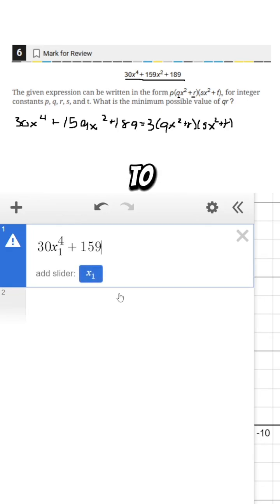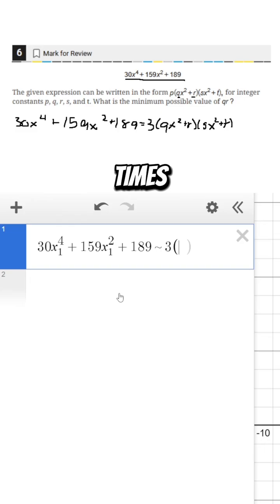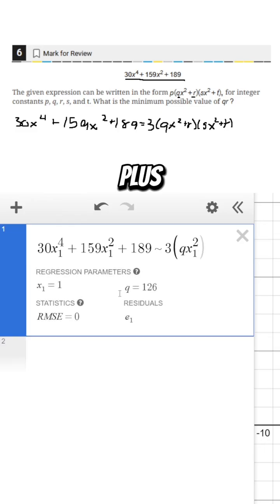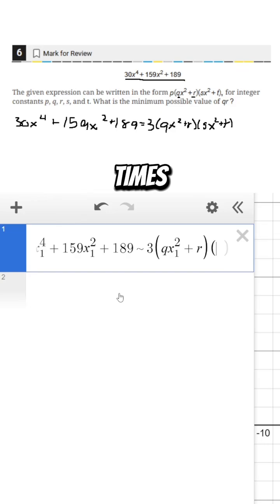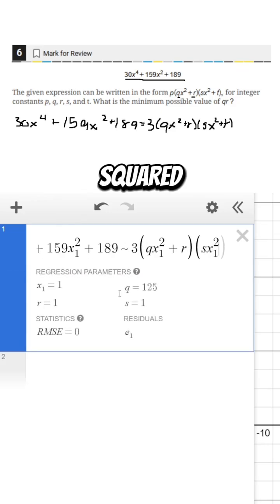I'll write 30x1 to the power of 4 plus 159x1 squared plus 189 is equivalent to three times qx1 squared plus r times sx1 squared plus t.